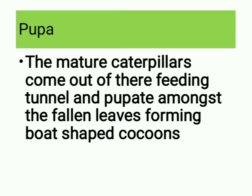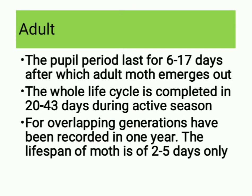Pupa: the mature caterpillars come out of their feeding canal and pupate amongst the fallen leaves, forming boat-shaped cocoons. Adult: the pupal period lasts for about 6 to 17 days, after which the adult moth emerges. The whole life cycle is completed in 20 to 43 days during active season. Four overlapping generations have been recorded in one year. The lifespan of the moth is 2 to 5 days only.